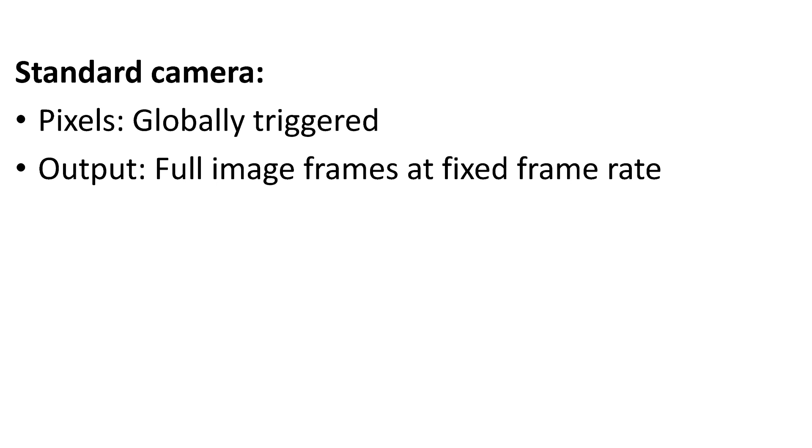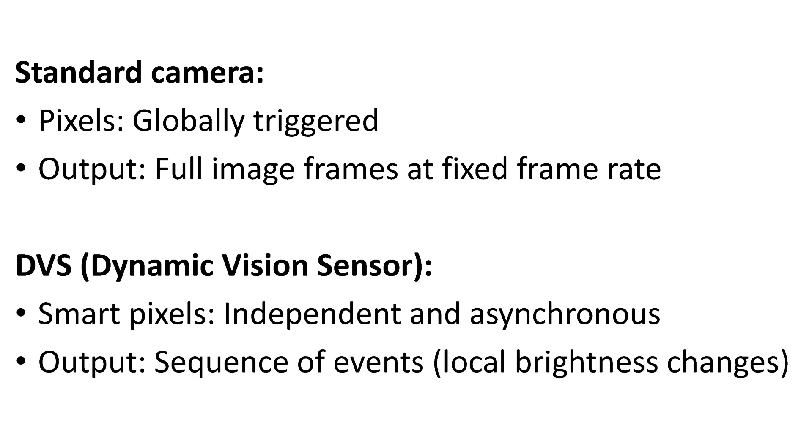A standard camera transmits full frames at a fixed frame rate. By contrast, a DVS has smart pixels. Its pixels are all independent of each other and only transmit information if they detect a change of brightness in the scene.